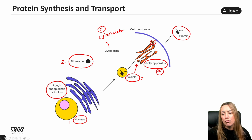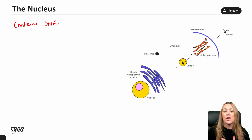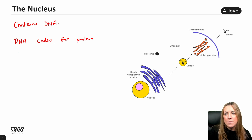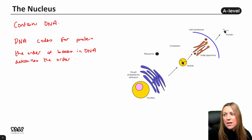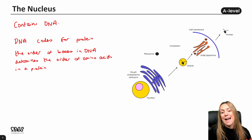Let's go through the individual role of each organelle, starting with the nucleus. The nucleus contains DNA. DNA contains bases, and the order of bases determines the order of amino acids in the protein. So DNA codes for protein — more specifically, the order of bases in DNA determines the order of amino acids in a protein, which is the primary structure of a protein, held together by peptide bonds.